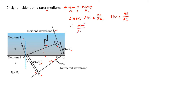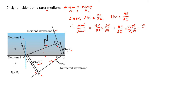Therefore, sine i by sine r equals BC divided by AC, multiplied by AC divided by AE. AC cancels, giving BC by AE. But BC is V1·tau and AE is V2·tau. Cancelling tau, we have V1 by V2. So, sine i by sine r is equal to V1 by V2. We are proving Snell's law.